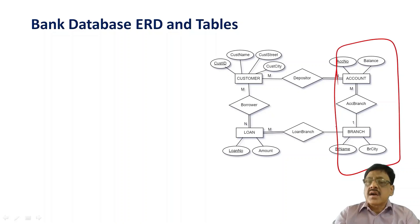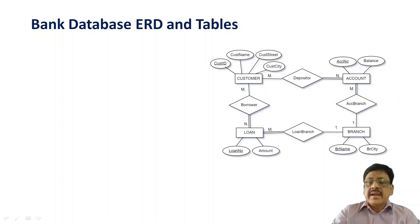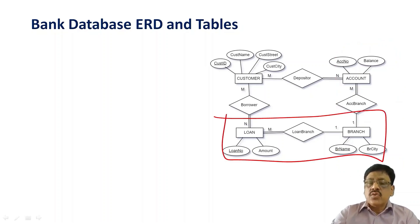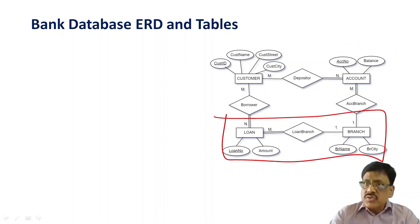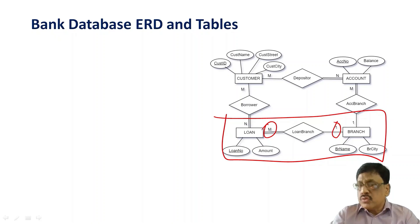If you look at branch and account, one branch has many accounts, but an account cannot belong to more than one branch. The second relationship is between branch and loan — one branch can have many loans, but a loan cannot belong to more than one branch. So the mapping pattern is many-to-one from loan to branch.